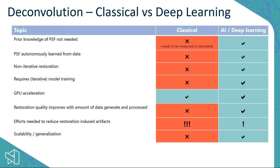For classical deconvolution, you need to know your lens, refractive index, numerical aperture, and so on, to estimate the point spread function of your system. For deep learning, that's not required — the deep learning model will autonomously learn the point spread function from the training data directly. That's a big advantage.